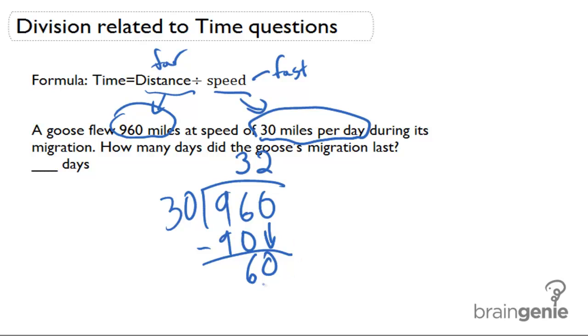Twice. And so we know that 2 times 30 is going to be 60, and 60 minus 60 is 0, so we have no remainder. And the goose's migration is going to last 32 days at that speed and for that distance.